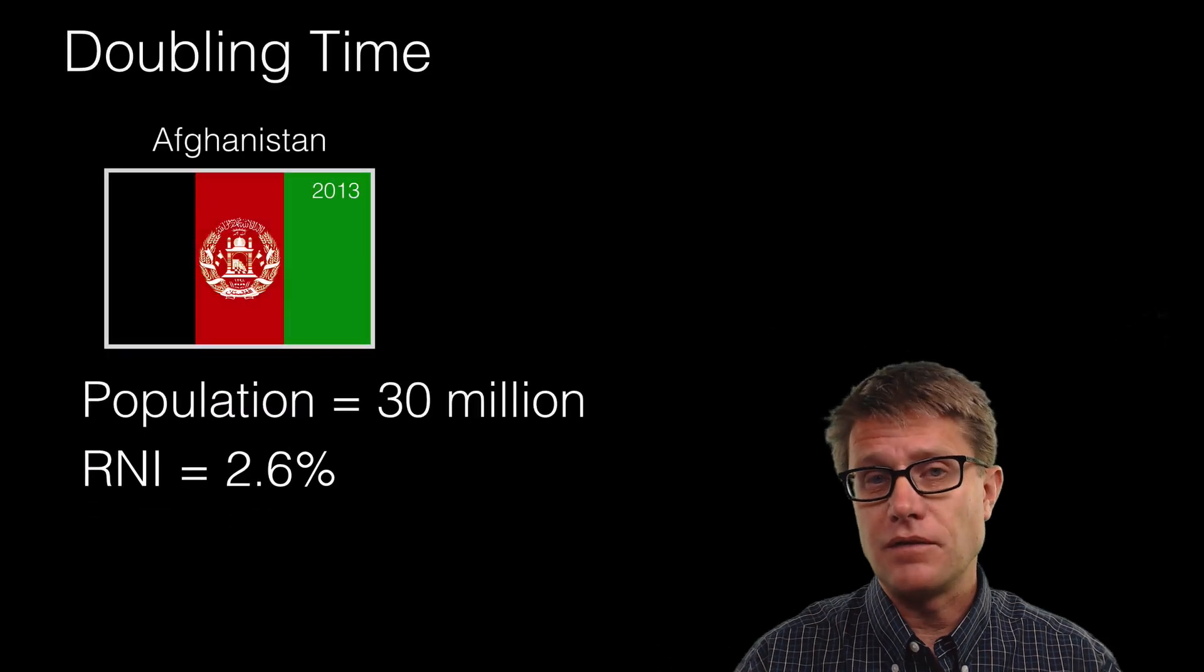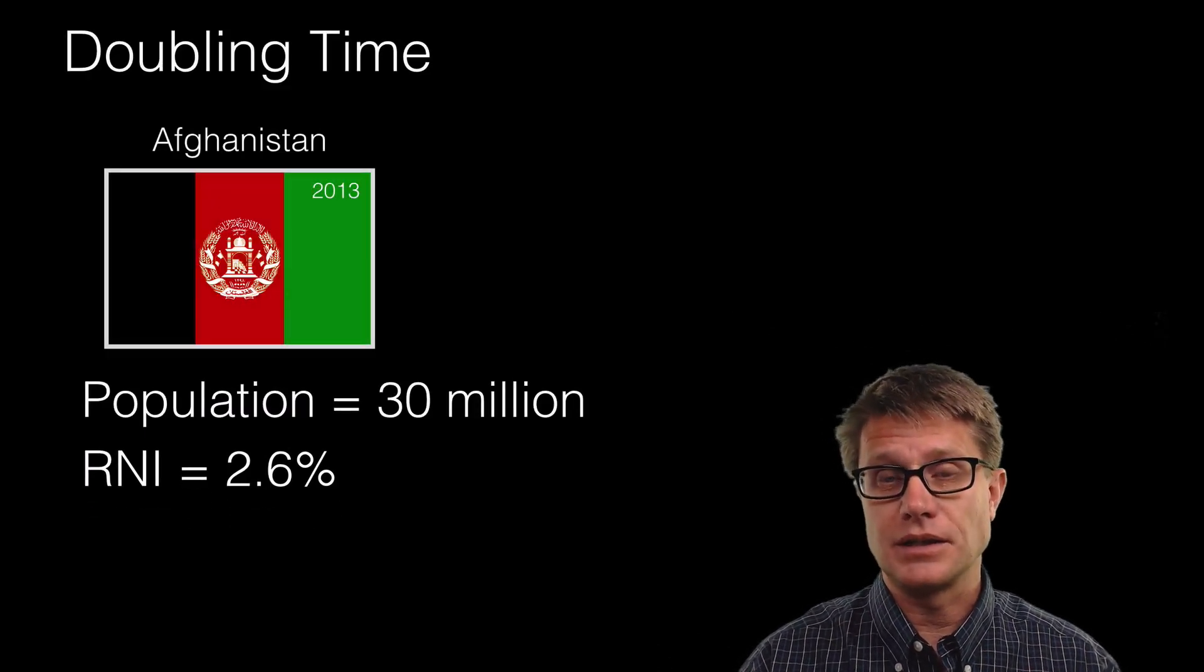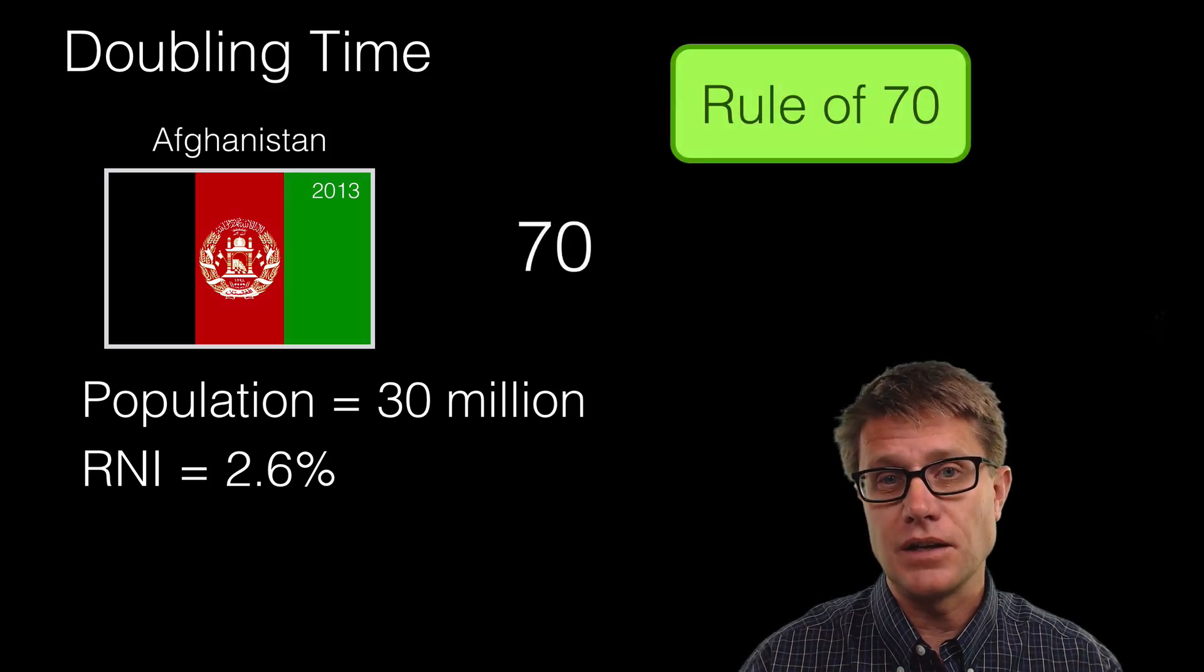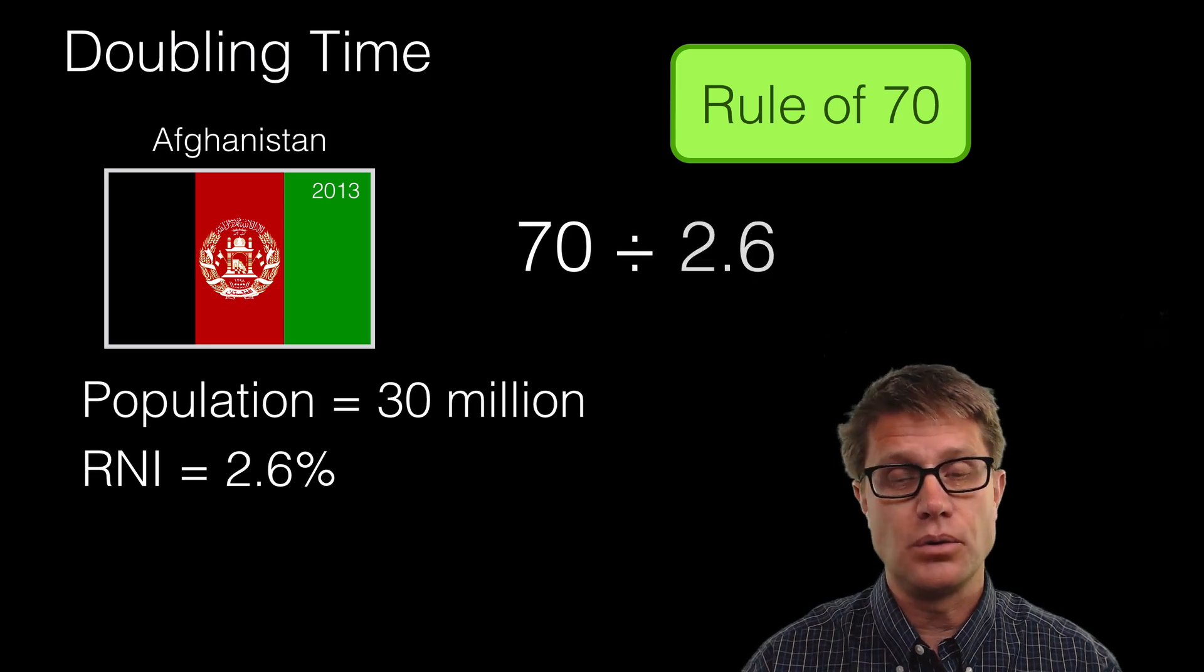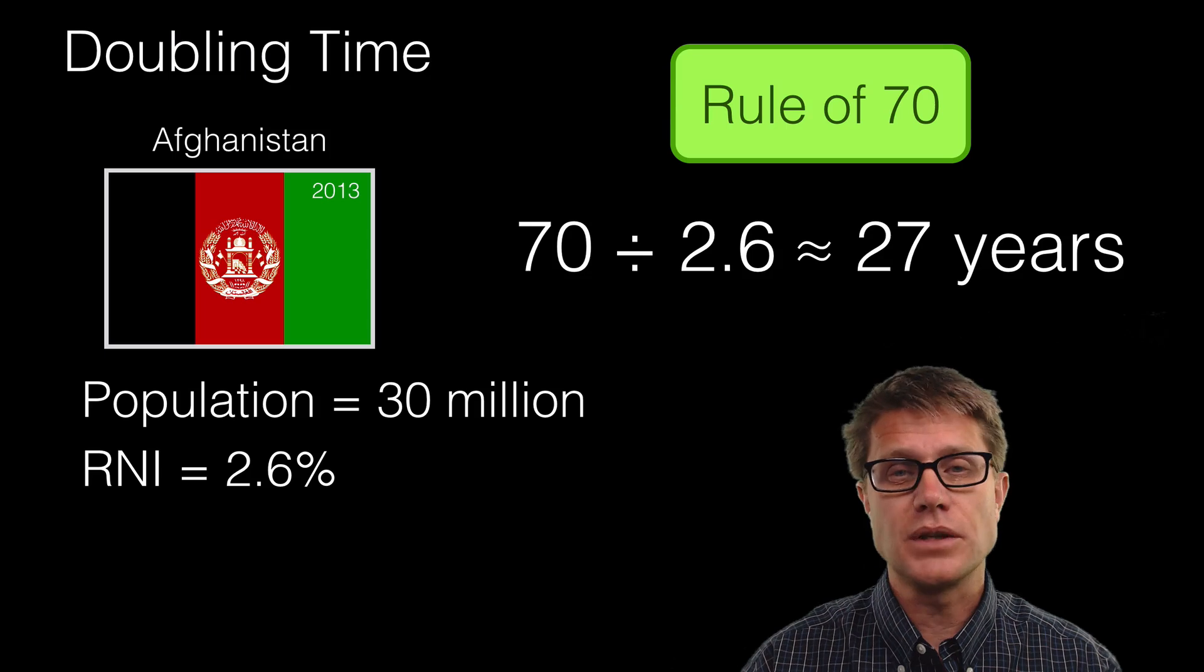Now once we have that value, how much it is increasing, it is very easy to figure out the doubling time. So how do we do that? Remember that rule of 70. You simply take 70 divided by the increased percent, which is going to be 2.6. And then it is going to give us approximately 27 years.